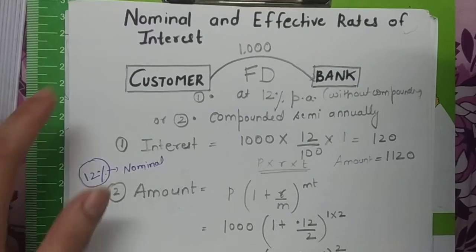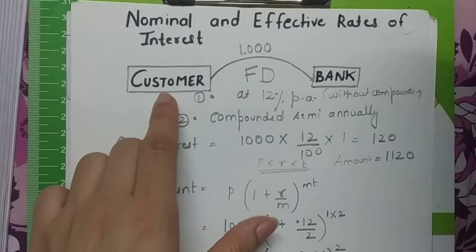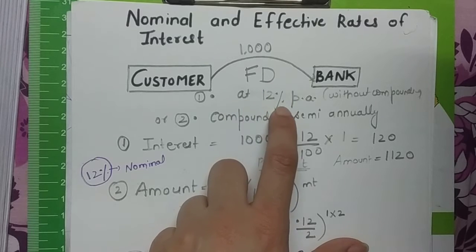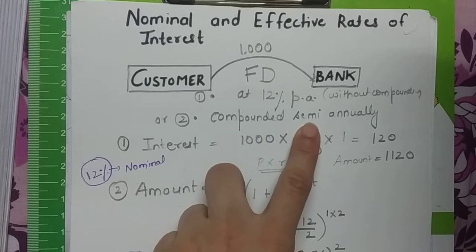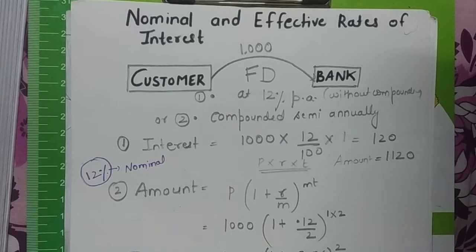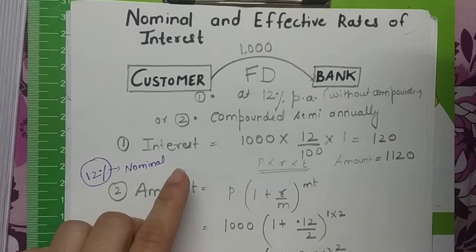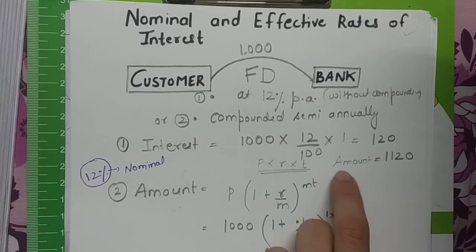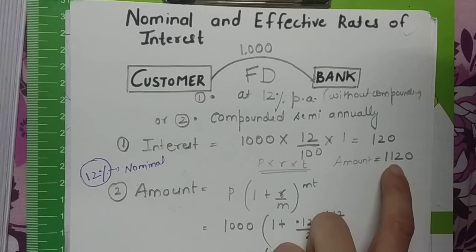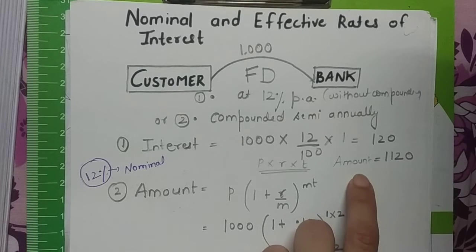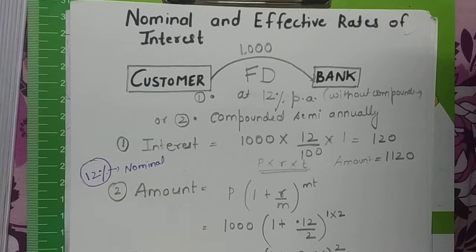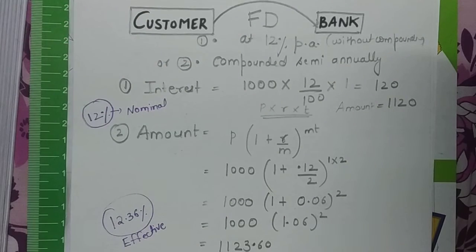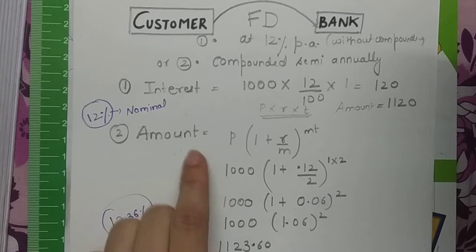To illustrate: suppose a customer deposits Rs 1000 in a bank as a fixed deposit, and the bank offers 12% per annum with semi-annual compounding. Without any compounding, the interest would be Rs 120 and the customer gets Rs 1120 at maturity. But with semi-annual compounding, the actual amount is different. In real life, banks typically compound quarterly.